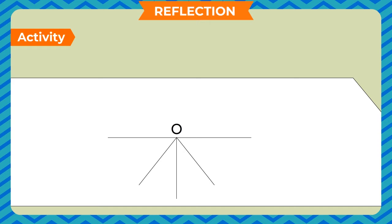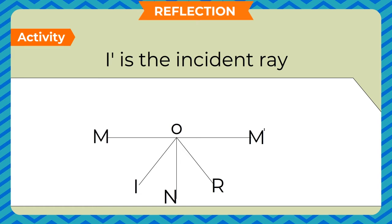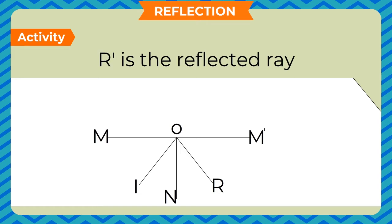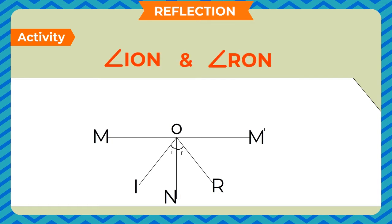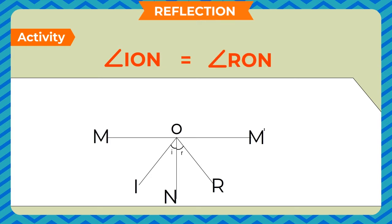Mark the mirror line as MM, the perpendicular as ON, which is called the normal, the line joining the first pair of pins as IO, and the line joining the second pair of pins as RO. I is the incident ray and R is the reflected ray. Measure the angle ION and RON. You will find that angle ION is equal to angle RON.